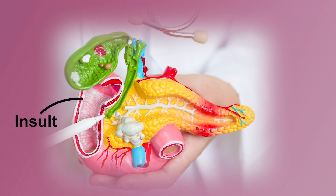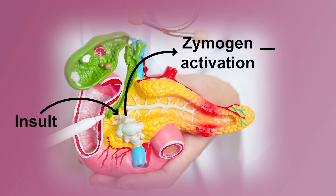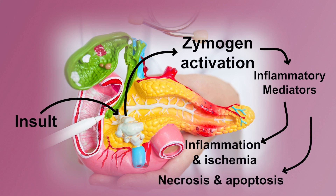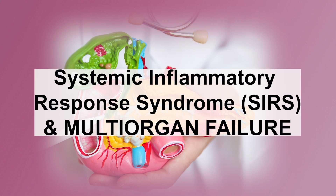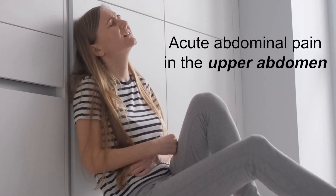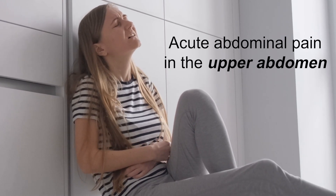How does acute pancreatitis occur? An insult to the gland leads to zymogen activation, generation of inflammatory mediators, then further inflammation and ischemia, necrosis and apoptosis in the gland, that in a subset could lead to SIRS and multi-organ failure.